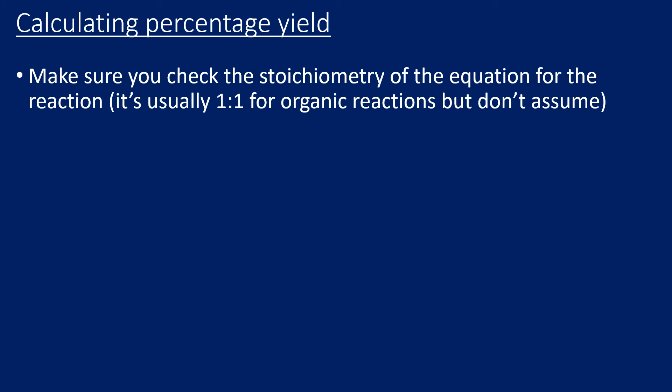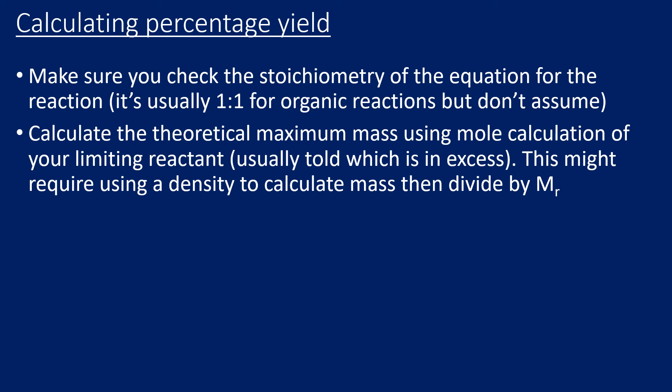The final step of any organic practical, once you've isolated your pure organic product, is to record the mass of your pure product and carry out a percentage yield calculation. Before calculating moles, double-check the stoichiometry in your reaction equation — usually in organic reactions it's a one-to-one ratio of reactant to product. Calculate the theoretical maximum mass via a molar calculation, making sure you use the moles of the limiting reactant. If you were using a liquid reactant, you'll likely be given a volume and the density, and you calculate mass as density multiplied by volume, then divide by the molecular mass to get moles.